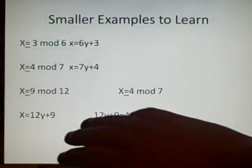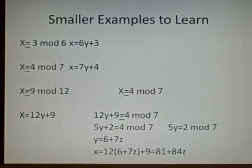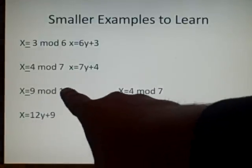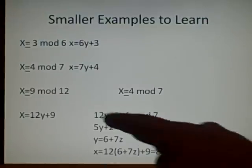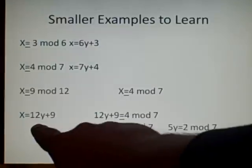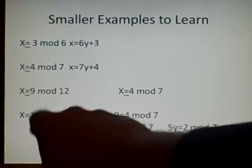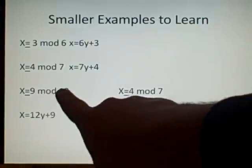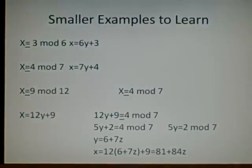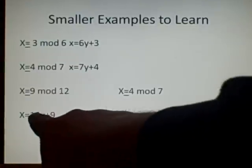So here, this one's a bit harder, we have two equations. We have x is congruent to 9 mod 12, and x is congruent to 4 mod 7. Now, we do exactly the same to start off with. First, we'll solve this one, in which case it's x is 12y plus 9. As you can see, 9 is our solution, and 12, we multiply that by the multiplier and add it.